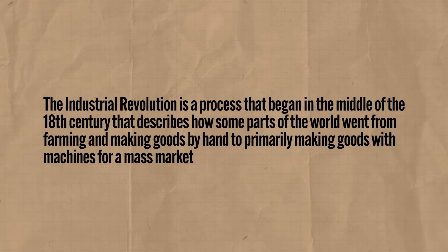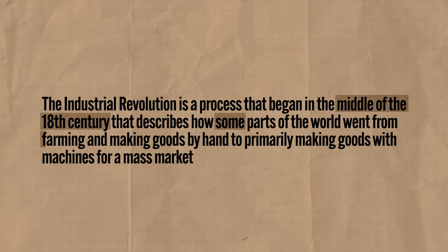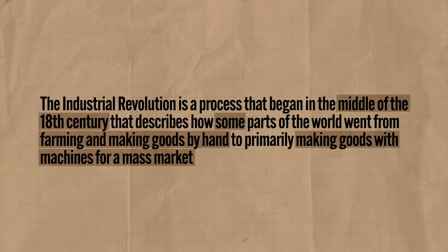What we're talking about is a process that began in the middle of the 18th century that describes how some parts of the world went from farming and making goods by hand to primarily making goods with machines for a mass market. The Industrial Revolution is the one development that really explains so much of everything we've talked about throughout this course.